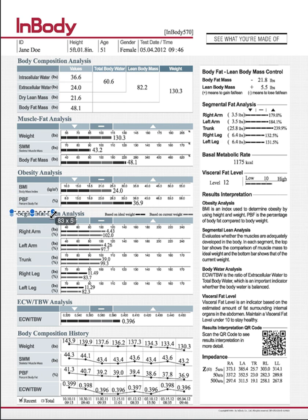This tracks her segmental lean analysis — how much muscle she has in each area of her body. The top line in each area is the actual pounds, and the bottom is what percentile she's in relative to other people her age and height. In her right arm she's in the 102nd percentile, and in her left she's in the 97th. Clearly she's right-handed, or she's had an injury in her left arm.